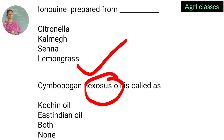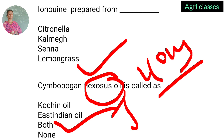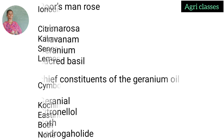Simbopogon flexuosus oil is called as — Kochin oil, East Indian oil, both, or none? The correct answer is both. We call it Kochin oil and also East Indian oil. In Kerala, it is referred to as Kochin oil. Lemongrass has two types — west Indian lemongrass and east Indian lemongrass.